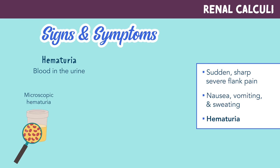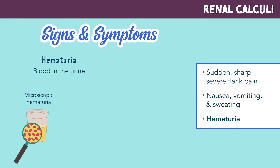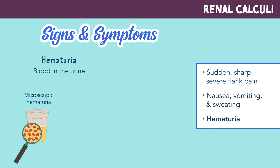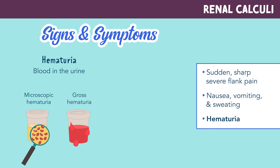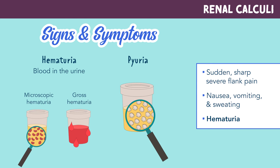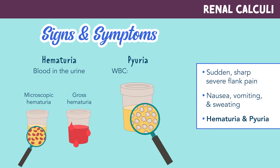There is microscopic hematuria, meaning you won't be able to see it with the naked eye, only under a microscope. And then there's gross hematuria, meaning you can easily see it in the toilet. And pyuria, which is white blood cells in the urine.